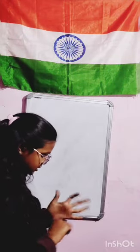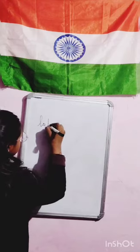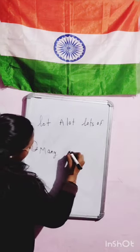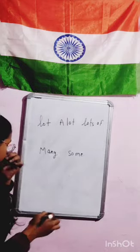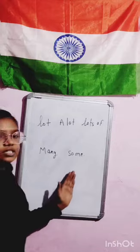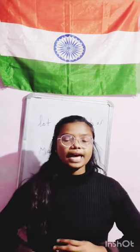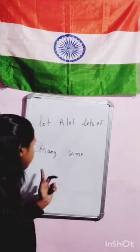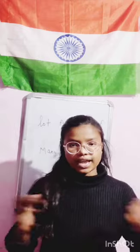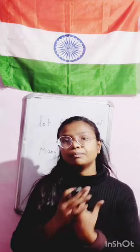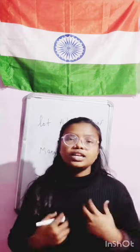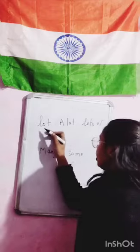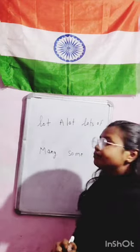Now let's cover 'a lot,' 'lots of,' 'many,' and 'some.' For 'some' — for example, I have 20 cookies, so I would say 'I have some cookies.' For 'many' — I have many chairs, I have many bottles, I have many clothes. So for showing a smaller quantity we use 'some,' and for showing a very large quantity we use 'many.'